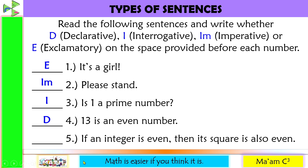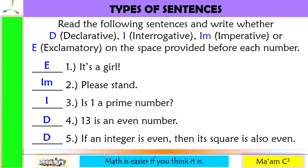Number five: 'If an integer is even, then its square is also even.' This is D, declarative. Now you might be asking, why do we need to study types of sentences? Because this is applicable in our today's lesson — the proposition.